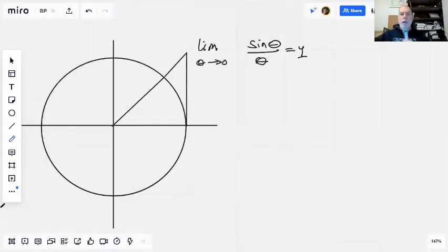Alright, we're interested in demonstrating this limit: the limit as theta goes to zero of sine of theta divided by theta.